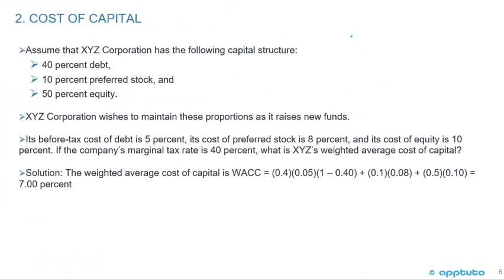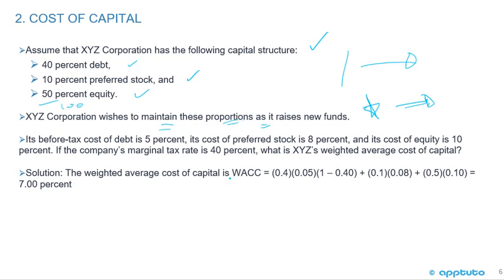Continuing with cost of capital, let's look at one more example. Assume XYZ Corporation has the following capital structure: 40% debt, 10% preferred stock, 50% equity — adding up to 100%. XYZ wishes to maintain these proportions as it raises new funds. The before-tax cost of debt is 5%, cost of preferred is 8%, cost of equity is 10%, and the marginal tax rate is 40%. What is XYZ's weighted average cost of capital?